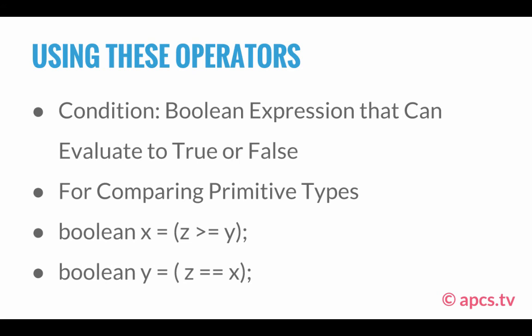Let's look at another example: boolean y equals z equals equals x. If z is equal to x, it will return true and the Boolean variable y will be true. If z does not equal x, it will return false and y will be false. Keep in mind that writing z equals equals x does not mean z's value becomes x — the values remain the same and it simply returns true or false depending on whether they're equivalent to each other.